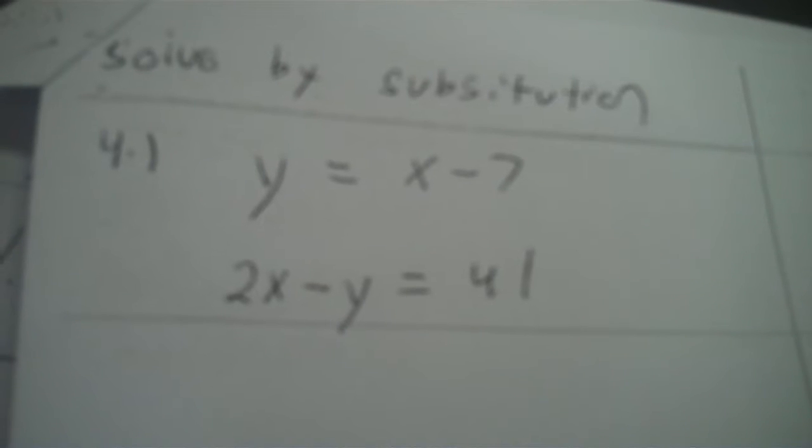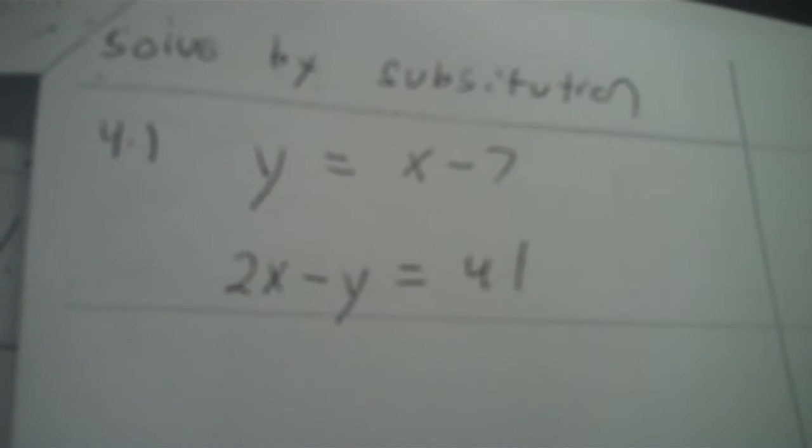Now solving without the graph — solving by substitution. Y equals x minus 7, and 2x minus y equals 41. Substitution means you have to find a base, and you have one right there with your y. That's your base. Now write the off-base equation. You're going to apply a 1 in front of the y, because y is the base and a parenthesis goes to y. That's going to be x minus 7.